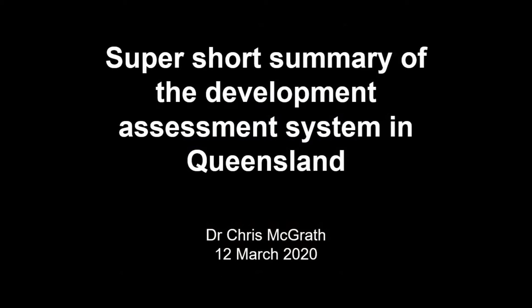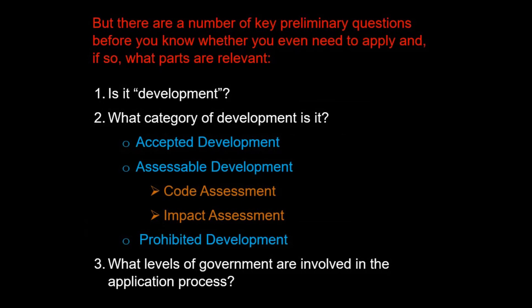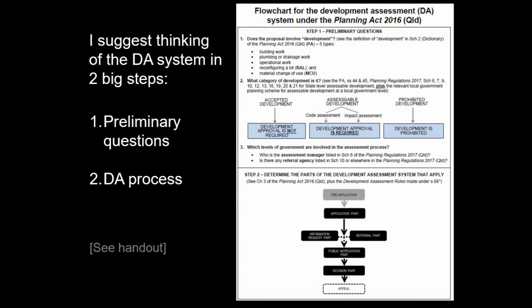This is a super short summary of the development assessment system in Queensland. Most government publications describe the DA system as starting with a pre-application meeting, but there are key preliminary questions before you know whether you even need to apply and, if so, what parts are relevant. There's a handout available on the website, and I suggest thinking of the DA system in two big steps: these preliminary questions, and then the DA process as described in government flowcharts. I'll work through those three preliminary questions using the handout.